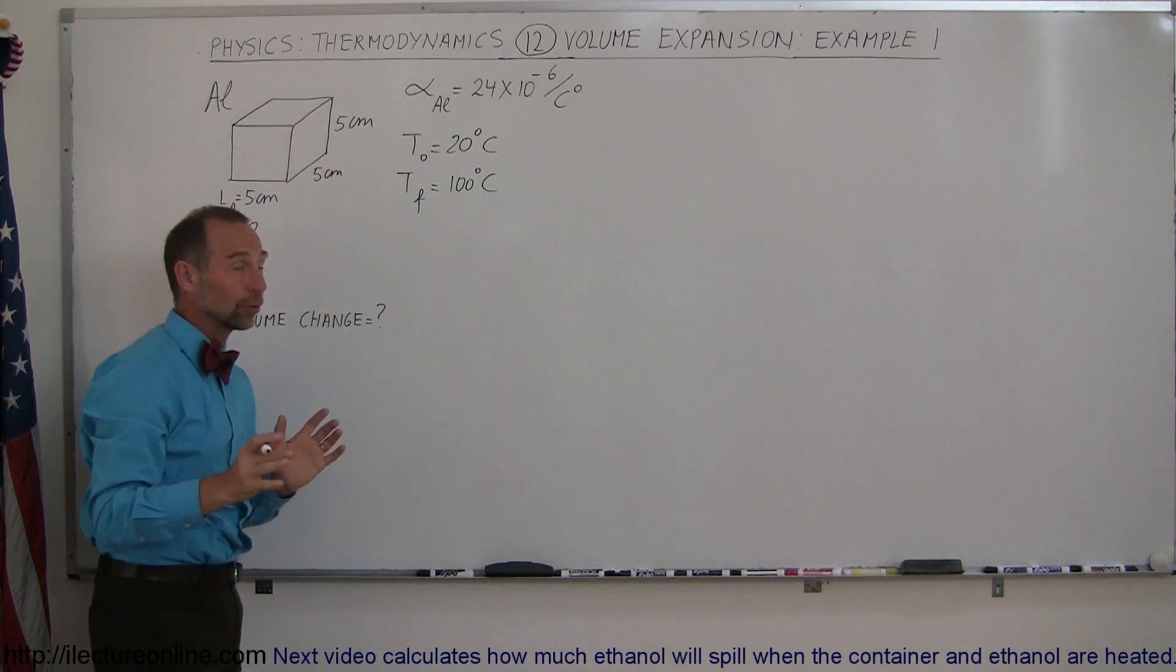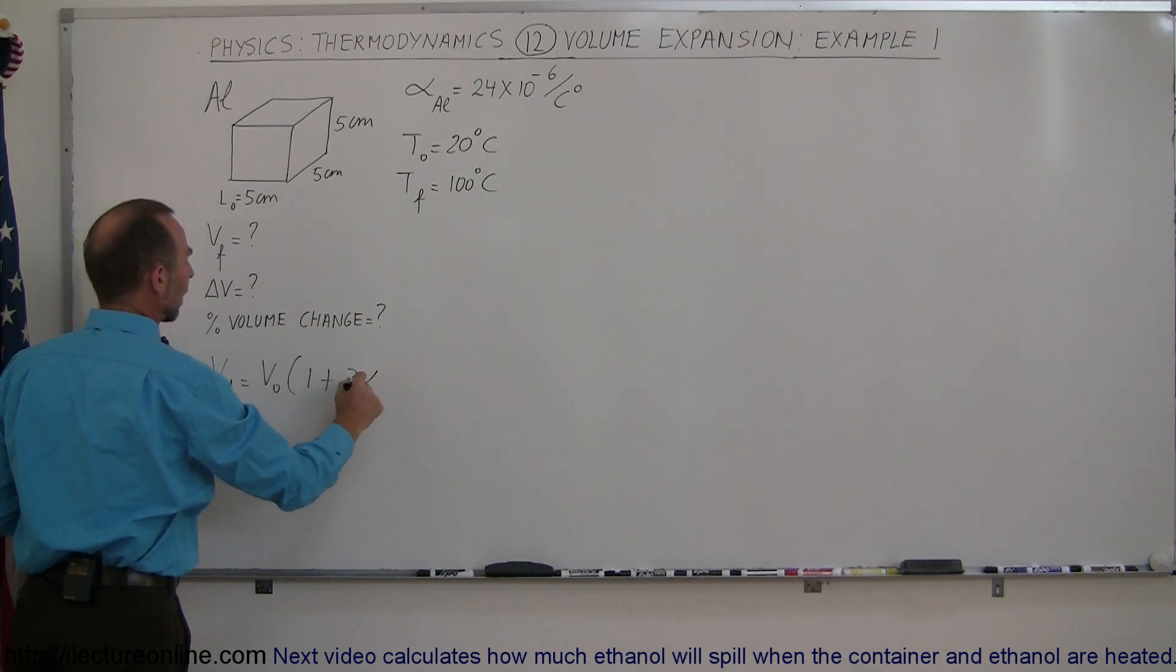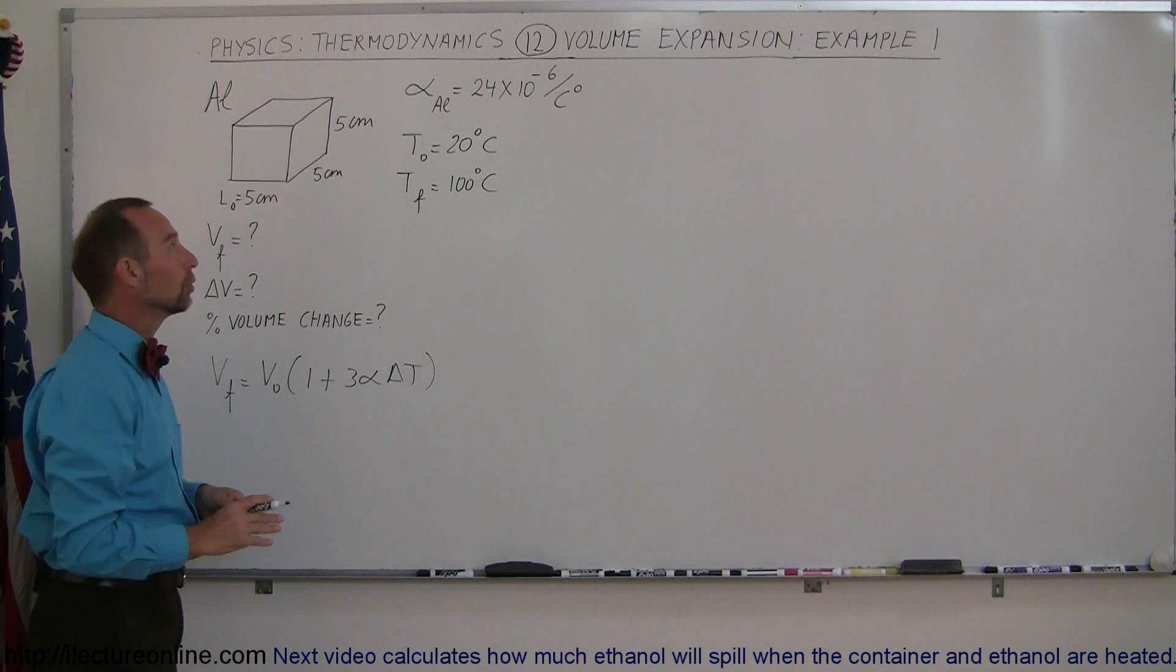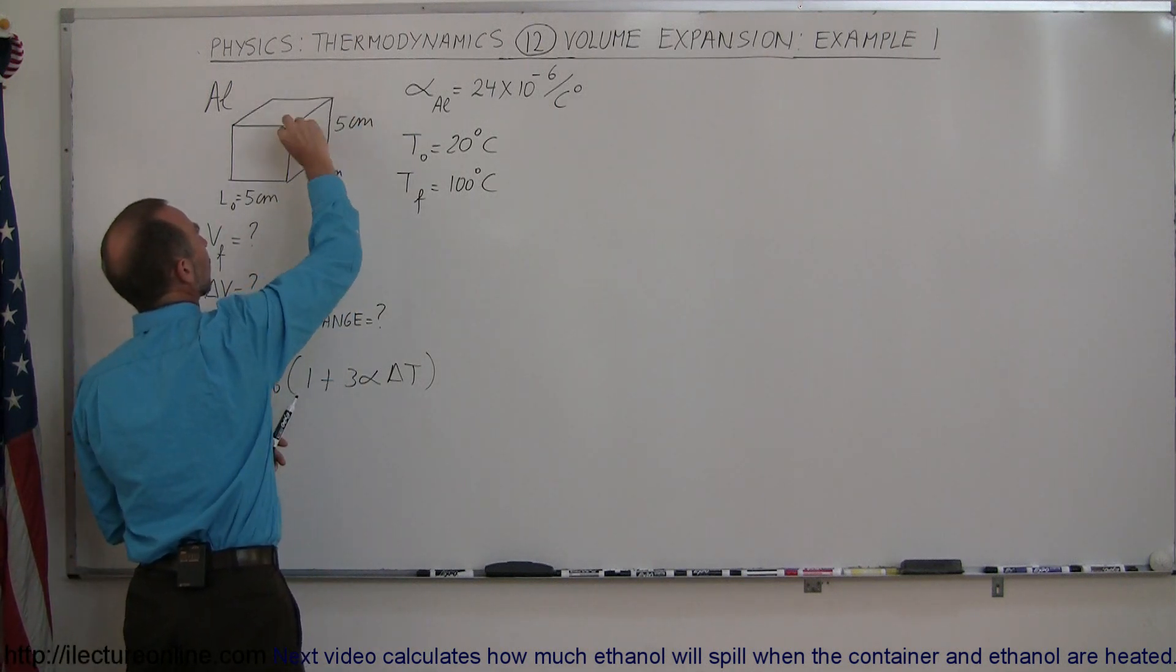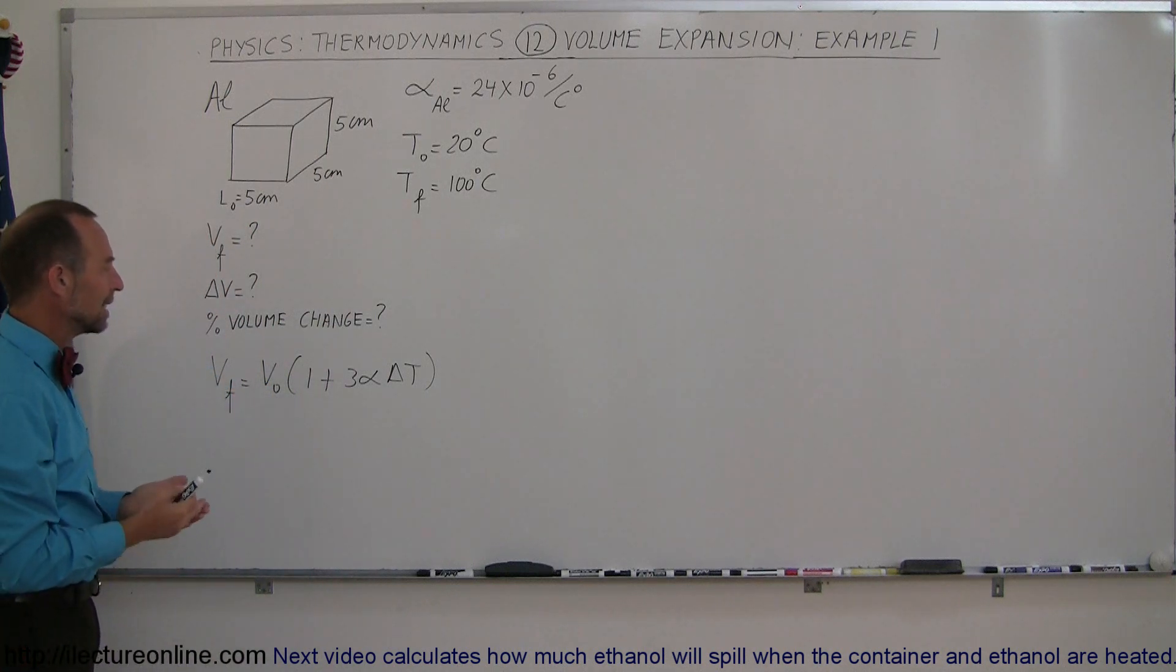Remember that the equation we're going to use is v final equals v initial times 1 plus 3 alpha delta t. When we did that, we ignored that little cube at the end and the three little bars of expansion that were supposedly so small that we didn't need to worry about that. But let's find out if that's indeed the case.